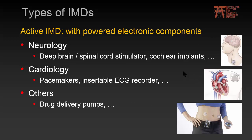Active IMDs come with powered electronic components. Examples in neurology are deep brain or spinal cord stimulators and cochlear implants. In cardiology, we have pacemakers and insertable ECG or loop recorders, and others may be drug delivery pumps. The electronics are housed in the CAN, or IPG — implantable pulse generator — which is connected to a wire called the lead.